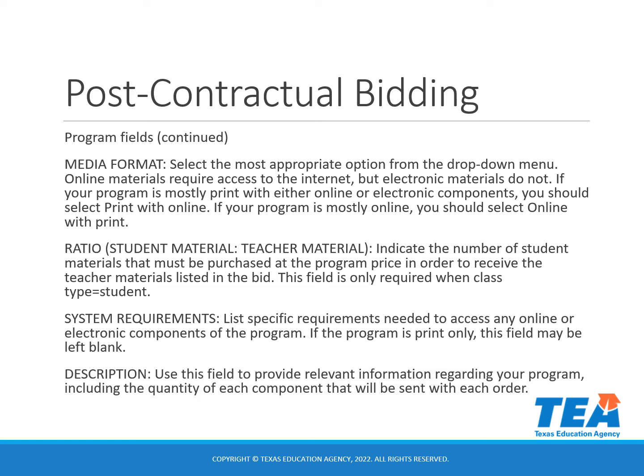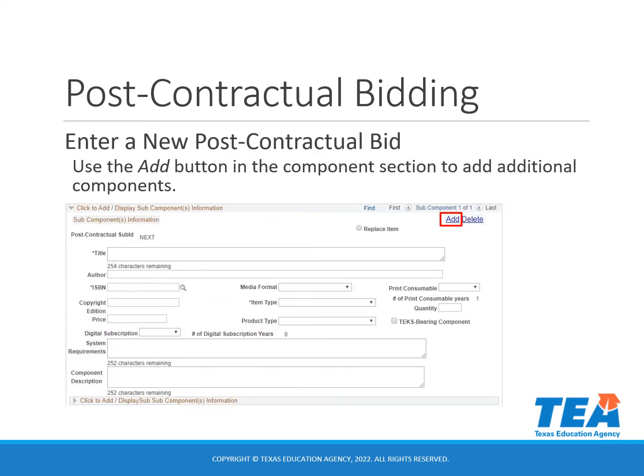The description field is where you will provide relevant information regarding your program, including the quantity of each component that will be sent with each order. You will use the add button in the component section to add additional components.